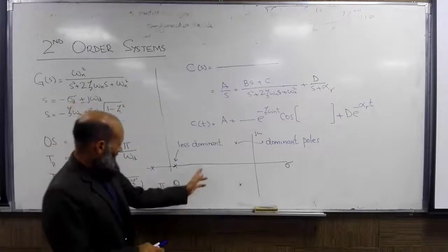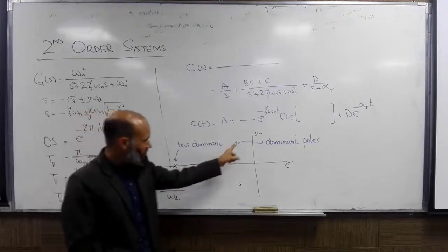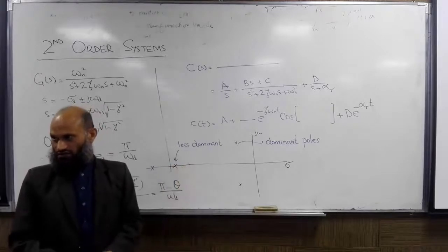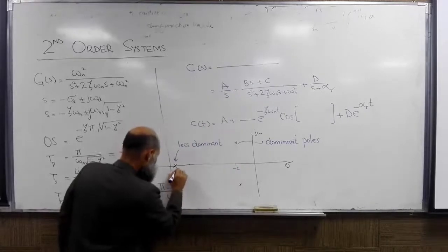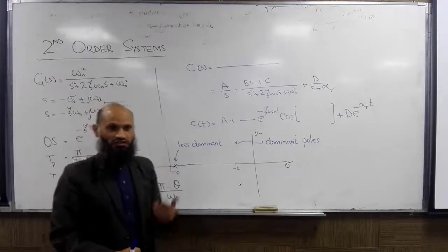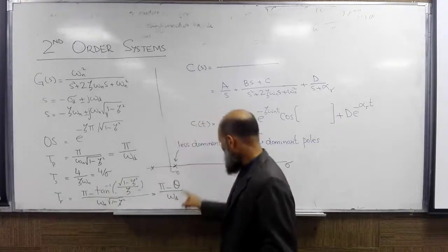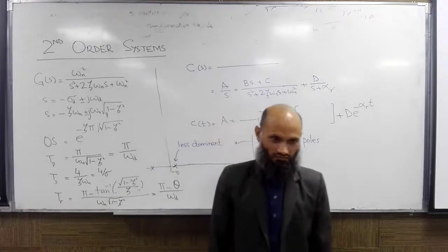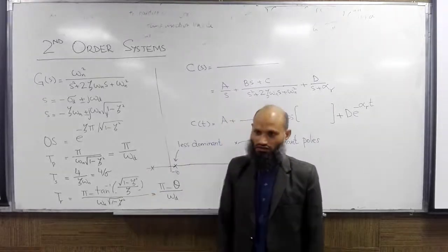The rule of thumb is that if the real part of the less dominant pole is five times greater in magnitude than the real part of the dominant poles, then it is considered less dominant. For example, if the dominant poles have real part minus two and the third pole has real part minus ten, then that third pole is less dominant. This is a rule of thumb and not a hard and fast rule — for example, if it is at minus 9.5, we can still say it is less dominant. However, the closer this pole is to the dominant poles, the less applicable these formulas become.